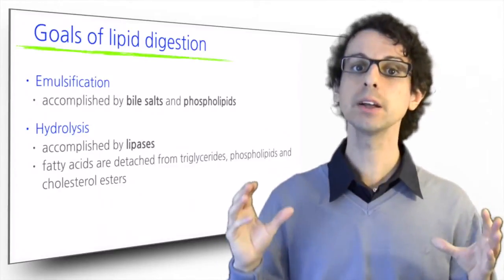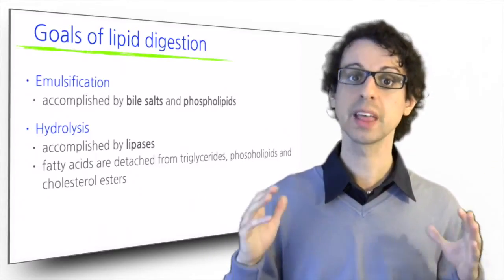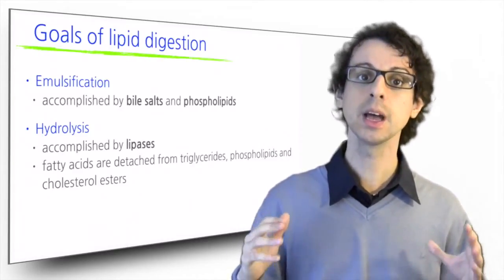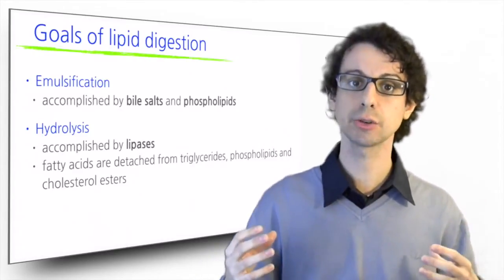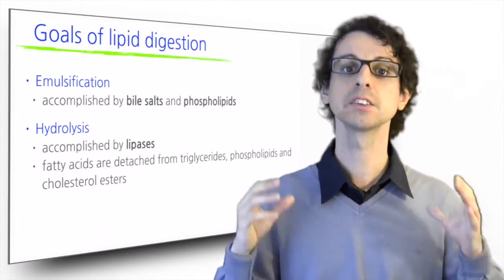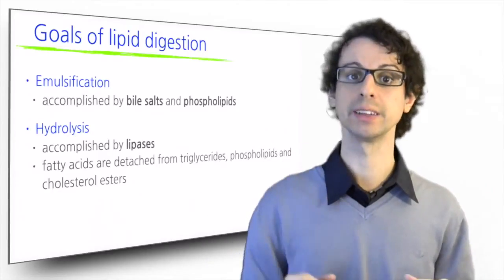Bile salts are biological detergents made from cholesterol that emulsify dietary lipids with the help of phospholipids. These emulsifying molecules are helped by the movements in our GI tract that shake the gastric content and intestinal content so that lipids and water can blend just like we do when we shake oil and vinegar.